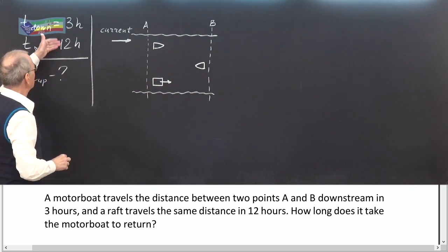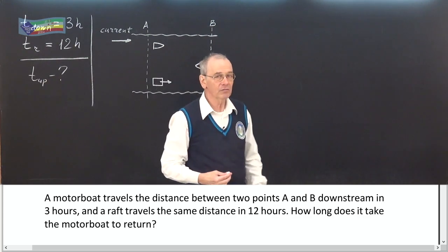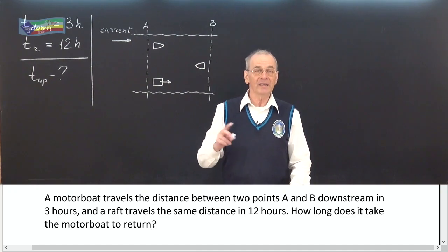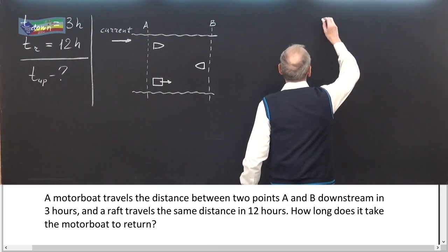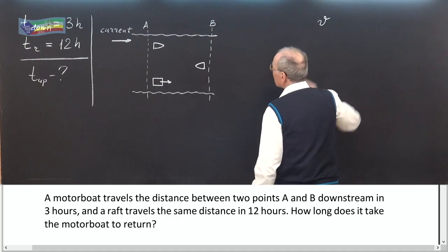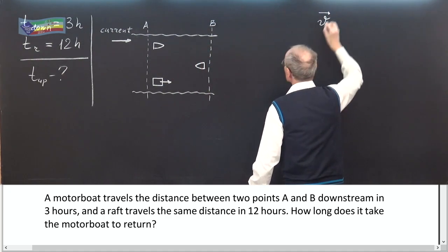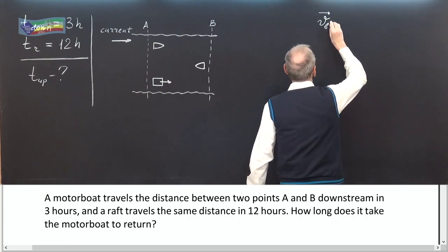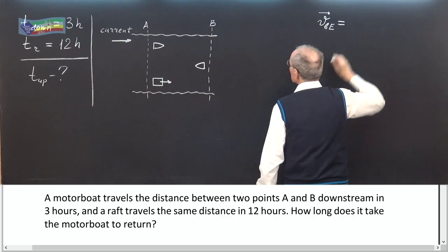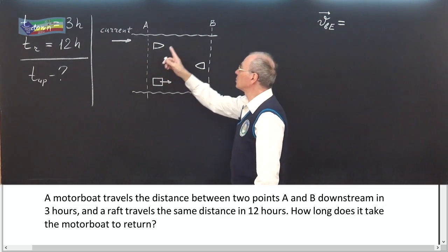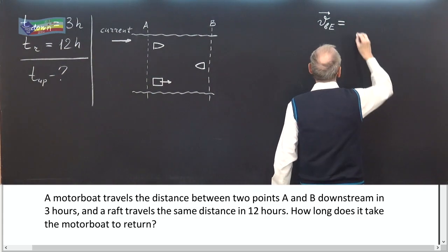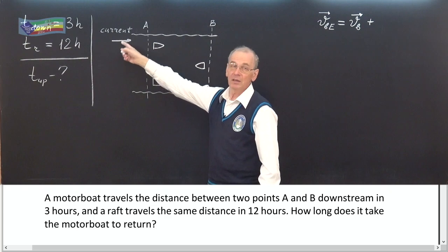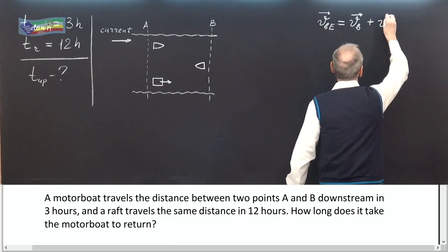We have times given in the problem, but the only relationship we can use is the formula for addition of velocities: the velocity of the motorboat relative to the earth equals V-boat plus V-current.